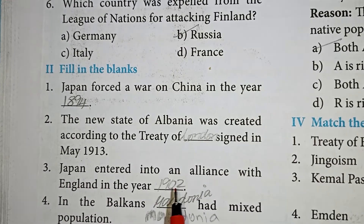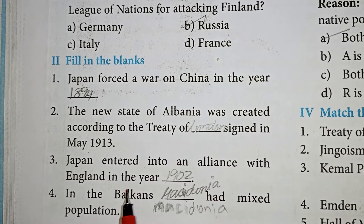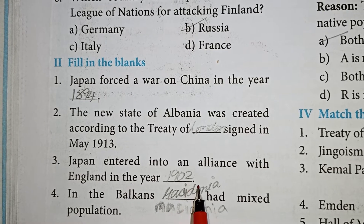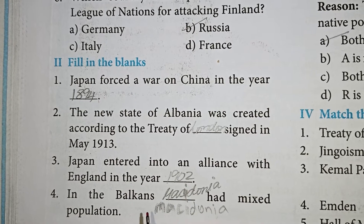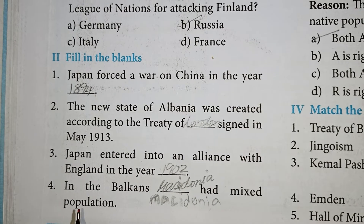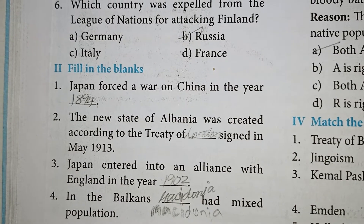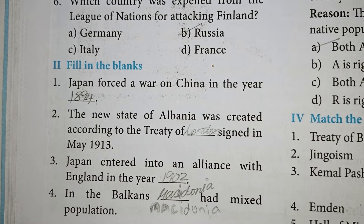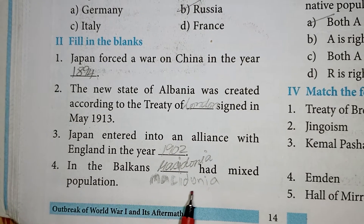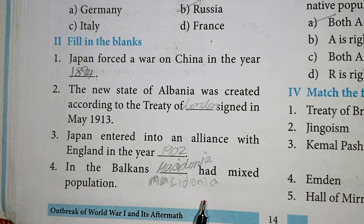Japan entered into an alliance with England in the year 1902. In the Balkans, Macedonia had mixed populations — correct answer.